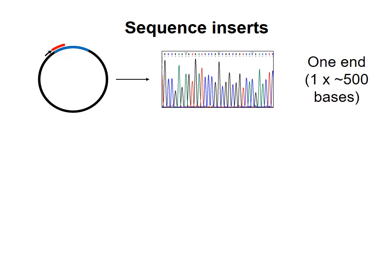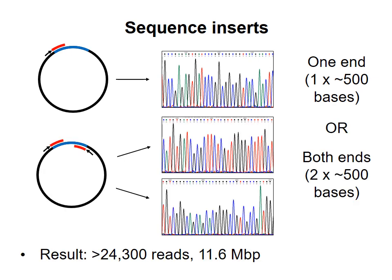Remember that the inserts are 1,600 to 2,000 base pairs long, while at the time they could obtain up to about 500 base pairs of sequence from one Sanger sequencing run. So they would not sequence the entire insert, just the first 500 base pairs or so. For some plasmids, they sequenced both ends of the insert. They ended up with over 24,300 reads representing 11.6 million base pairs — over six times the length of the genome they're trying to sequence. Because the fragments are randomly located on the genome, you need lots of reads to try to see as much of the genome as possible.